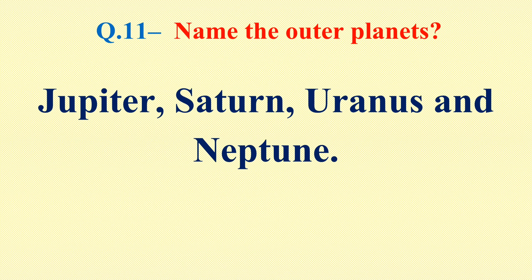Question number 11: Name the outer planets or the Jovian planets. Their names are Jupiter, Saturn, Uranus and Neptune. All these are the outer planets or the Jovian planets.